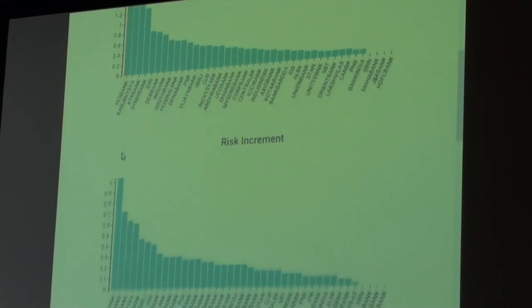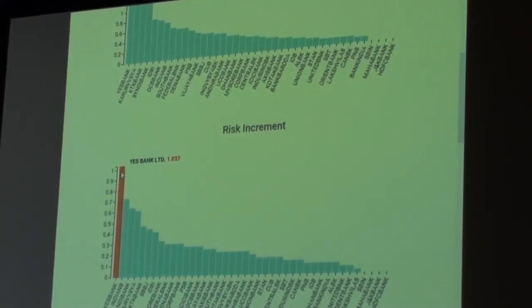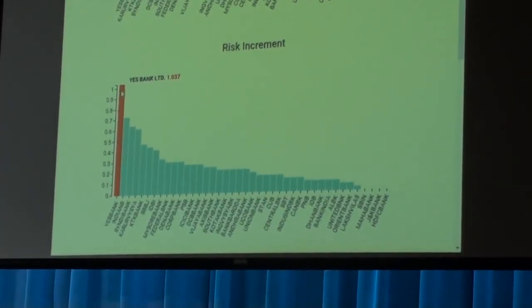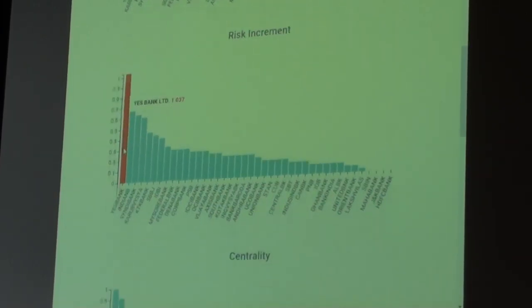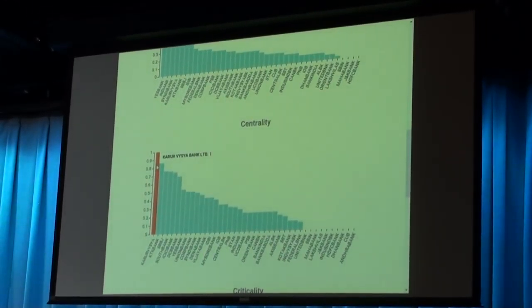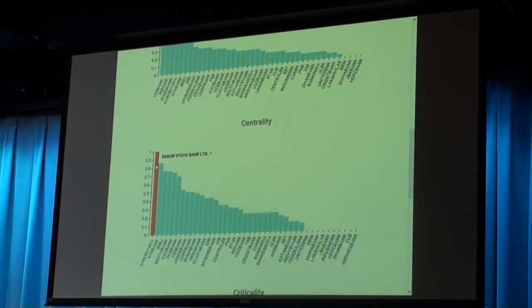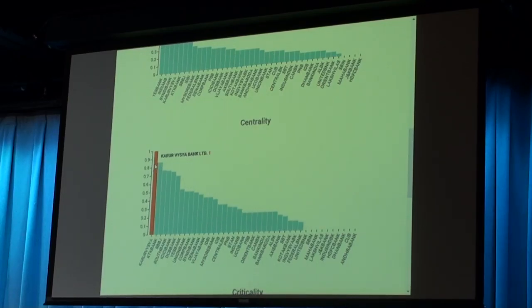If you go further down, this is risk increment. This is, again, Yes Bank is the most risky. It says that if your credit rating drops one notch, how much will you contribute? That's 1.07. So, the systemic risk will go up by 1.03 if Yes Bank drops one credit notch. Centrality. Who's the most central? That's Karnataka Bank. This is the one that's in the middle, connected to everybody. So, centrality, like I told you, is who's the most important person, ignoring the level of disease at each node, just in the network.